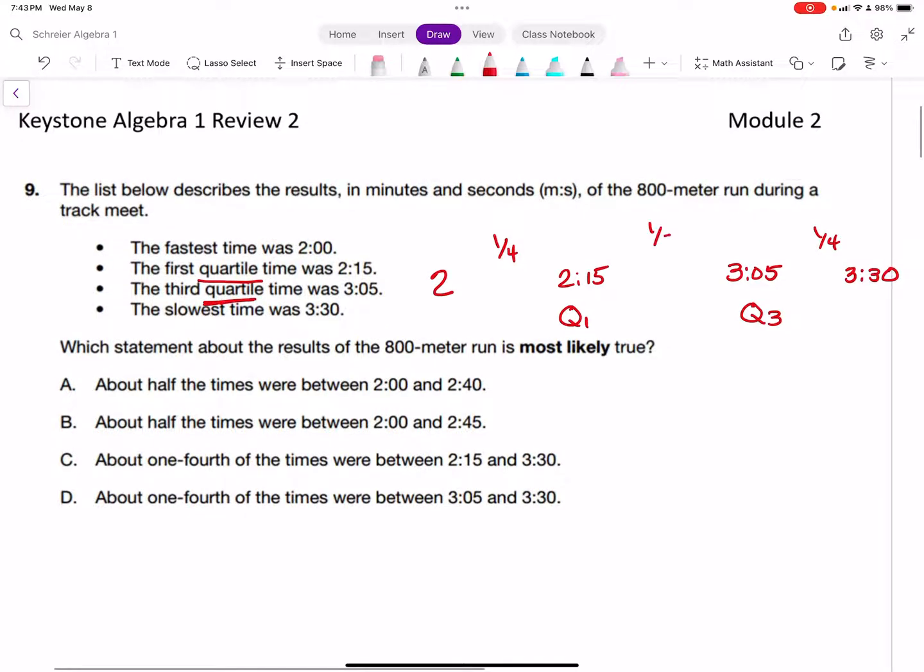Let's look at answer choices. It says about half the times are between 2:00 and 2:40 - that's not true, half the data is here. About half the times were between 2:00 and 2:45 - again not true because half the data lives between the quartiles.